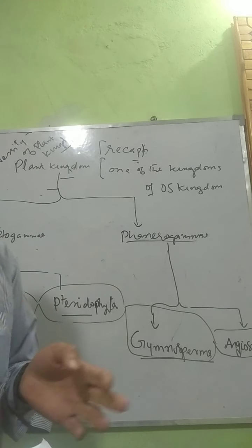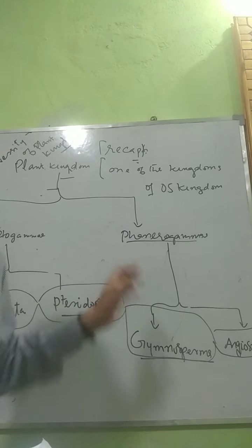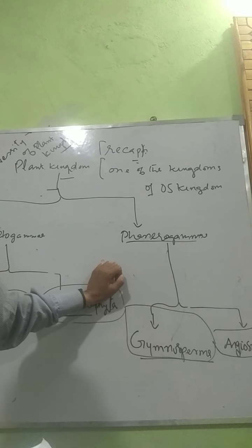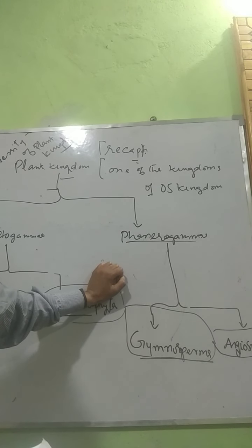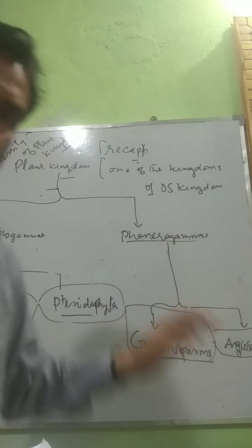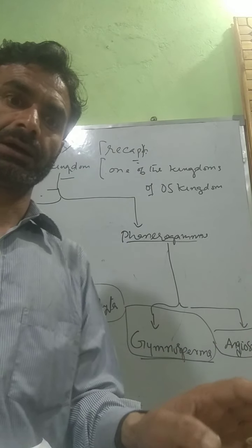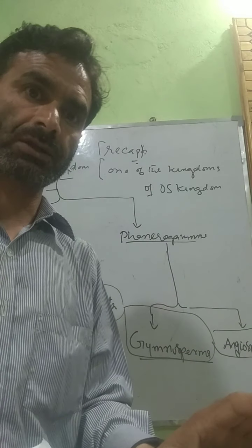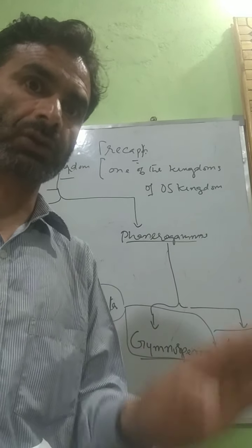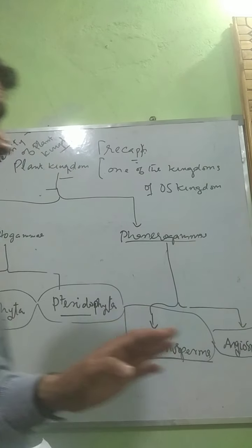For example, Solanum nigrum, Solanum melangena, Solanum tuberosum — Solanum is the genus. Under this genus, we have three species. So diversity increases as we go down the taxonomic hierarchy.